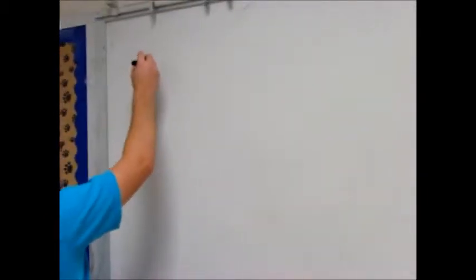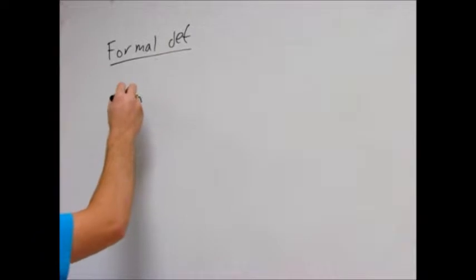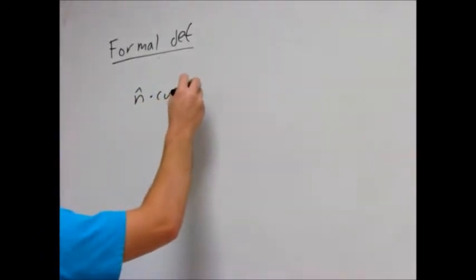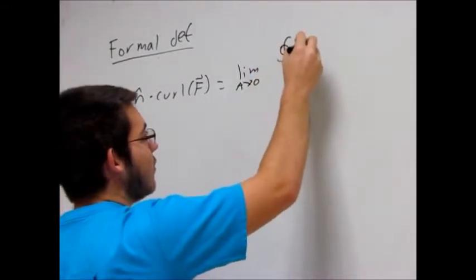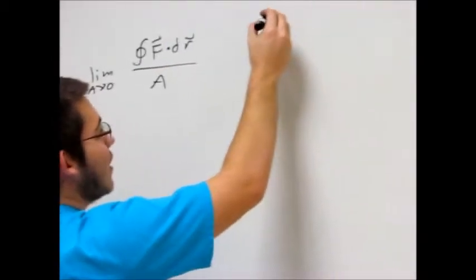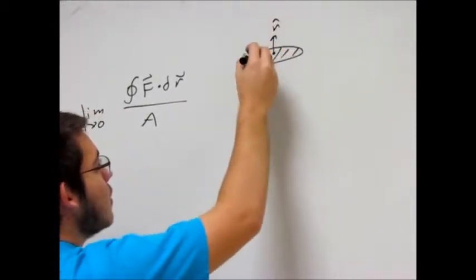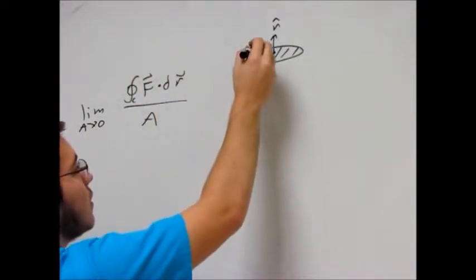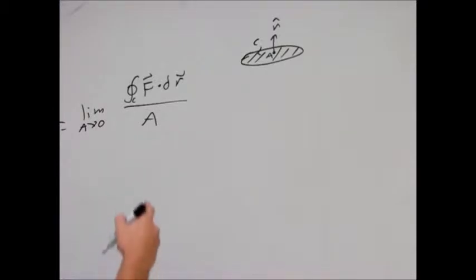So earlier I talked about the divergence of curl. And I mentioned the formal definition of curl was this: n dot curl f, as the limit as A goes to zero of the integral over C of F·dr divided by A, where A is some area, n is a normal vector, and C goes counter-clockwise. A is the area of this region, and as A gets smaller, there's the curl of f.